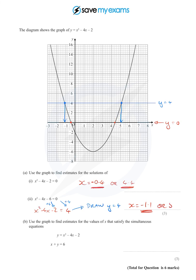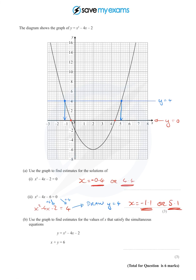Now what am I asked to do? Use the graph to find estimates for the simultaneous equations. But I'm not going to solve the simultaneous equations algebraically because it says use the graph. And again I need to draw another line on here. I've got that line, that curve there, it is again the happy parabola. So I need to draw this line x + y = 6.